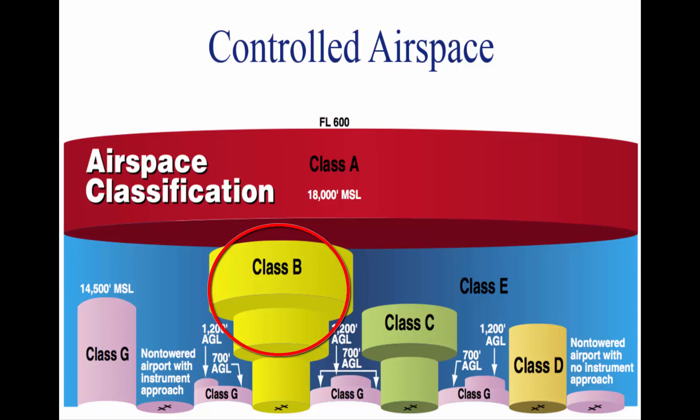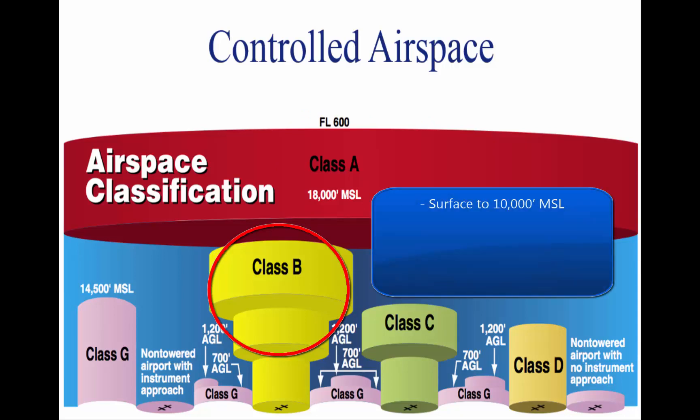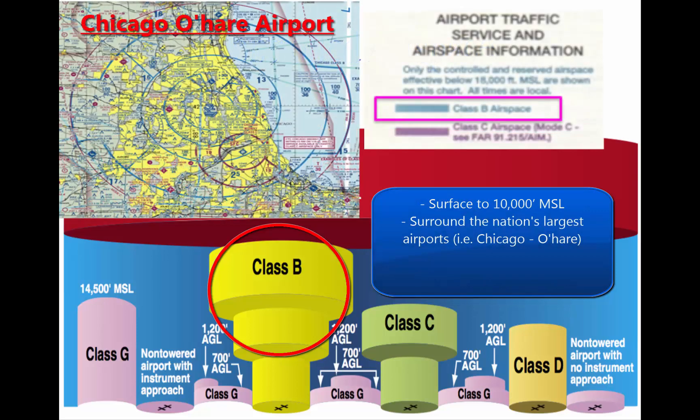Class B airspace is generally located from the surface up to 10,000 feet above sea level, and it surrounds the nation's largest airports. Each Class B airspace is individually tailored based on the needs of the airport or airports in and around them. All Class B airspaces are made from the surface and two or more airspace regions. As shown in the picture above, Class B airspace resembles an upside-down wedding cake.